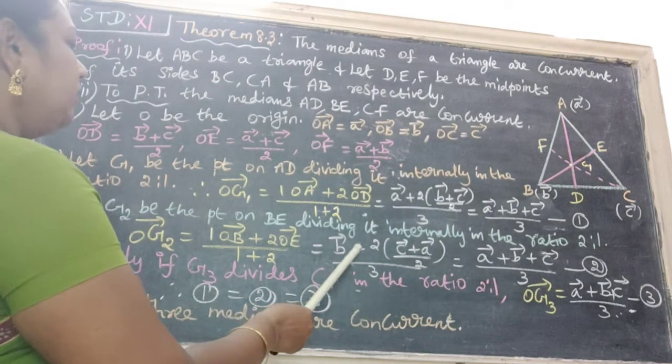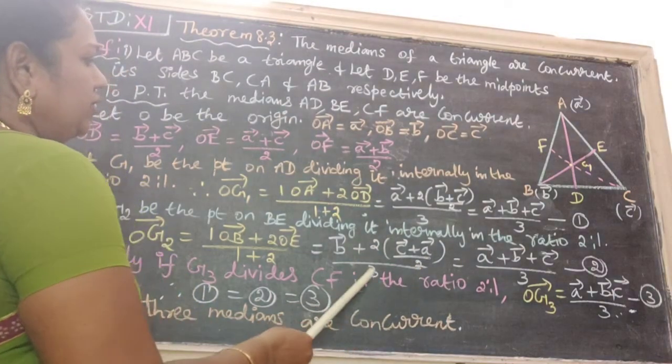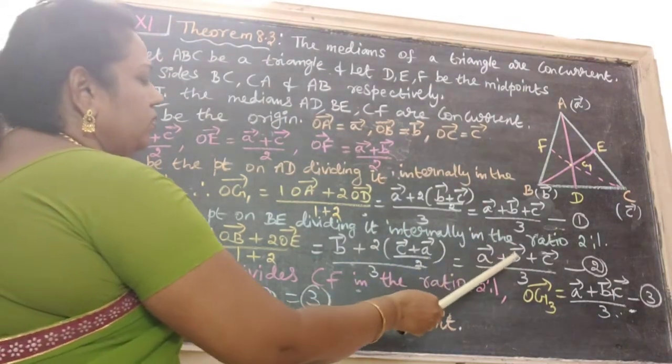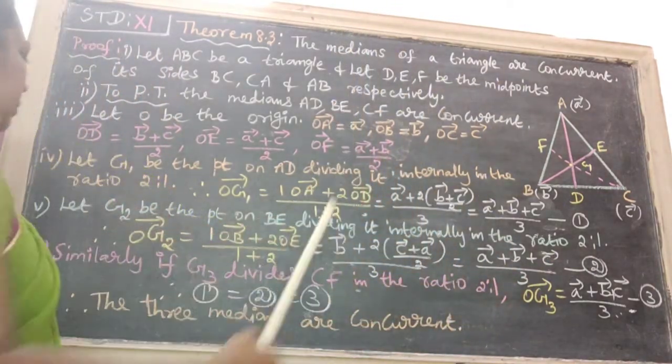That is B vector plus 2 times (C vector plus A vector) divided by 2. The 2's cancel. Therefore, we get A vector plus B vector plus C vector divided by 3. That is equation number 2.